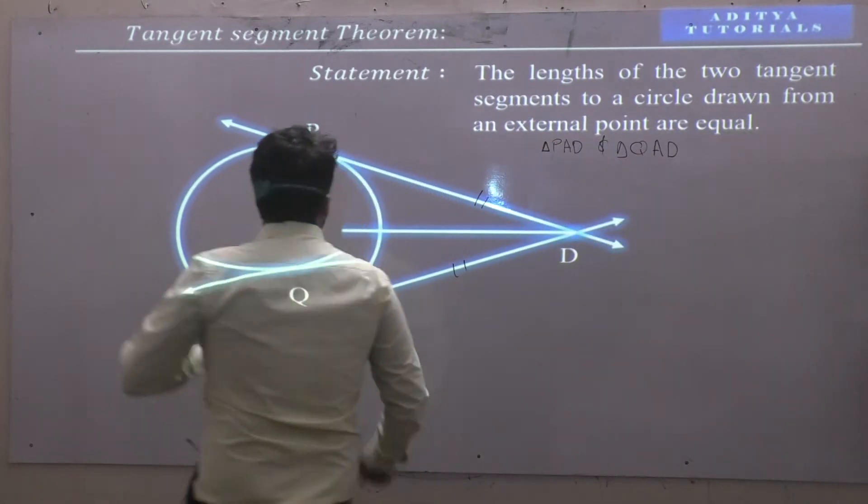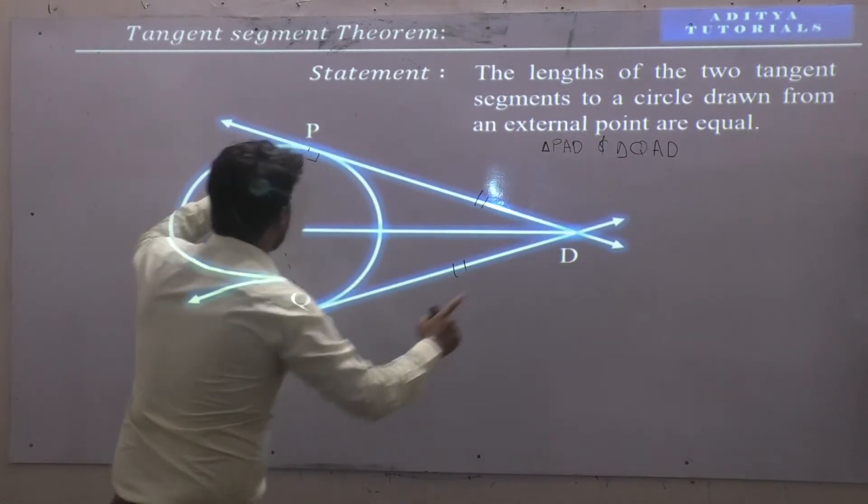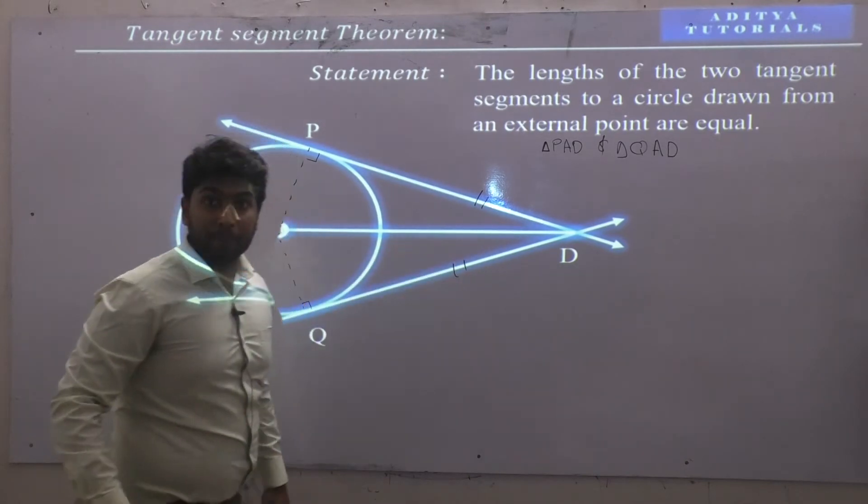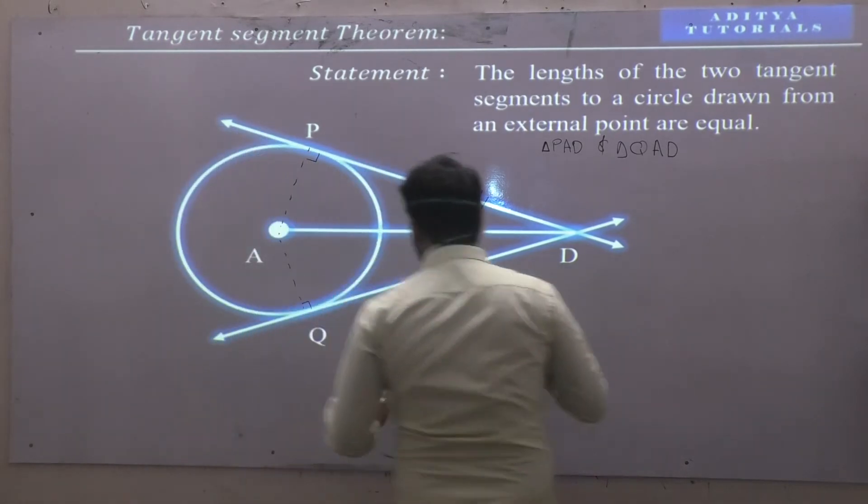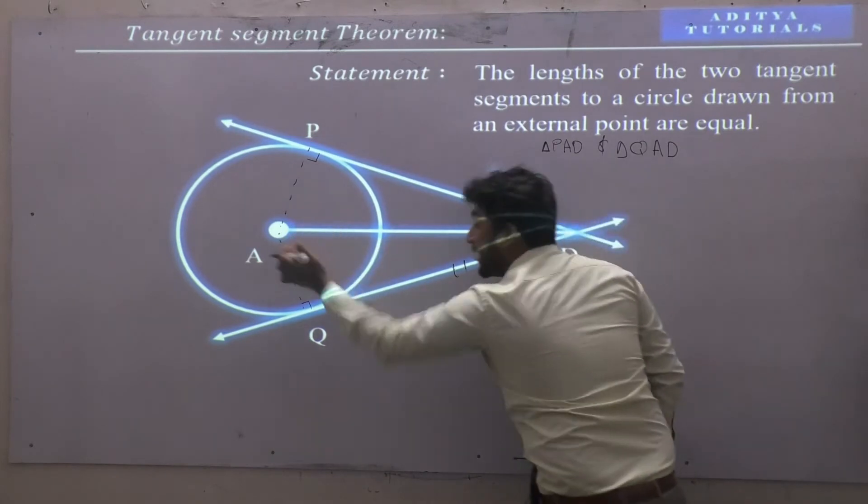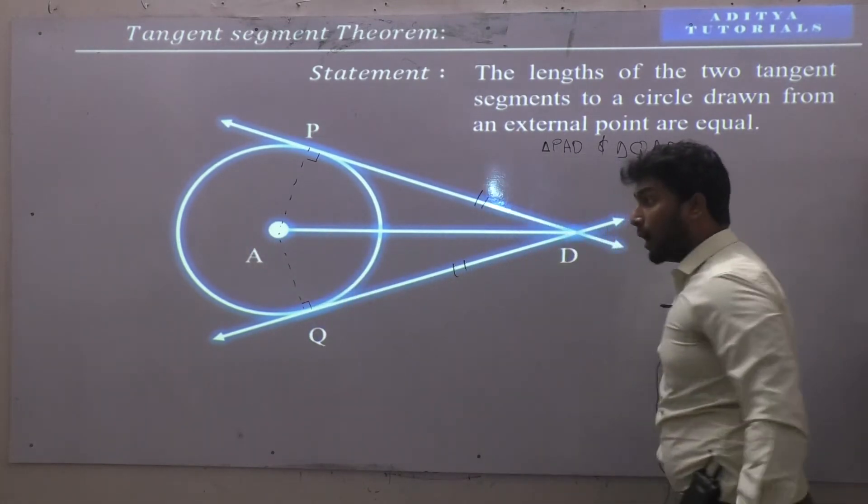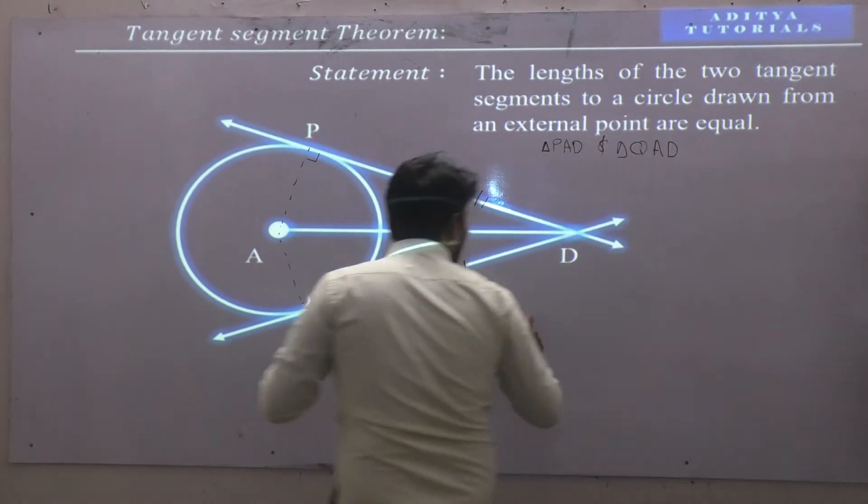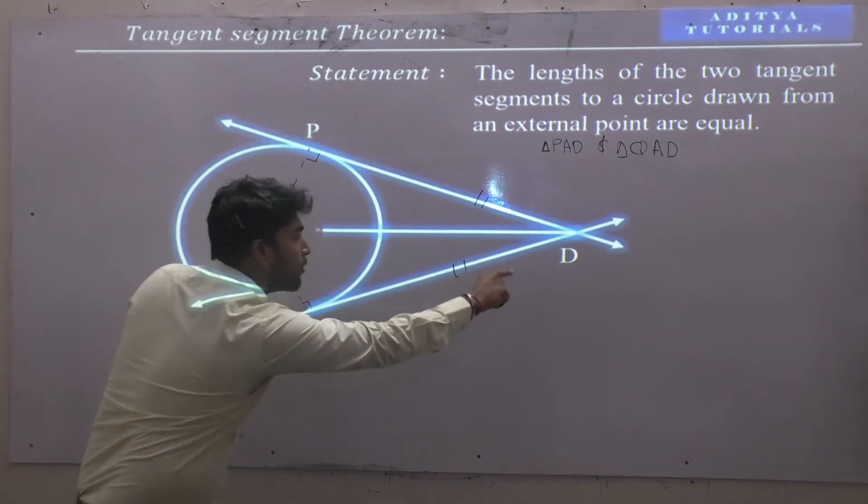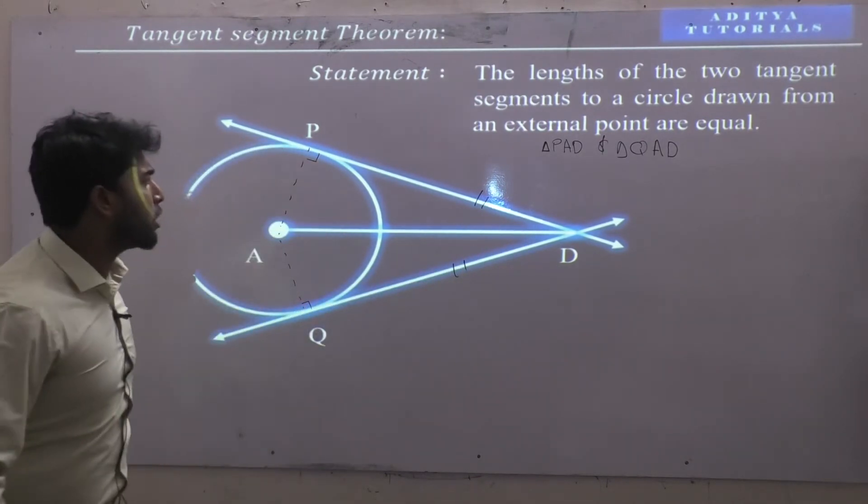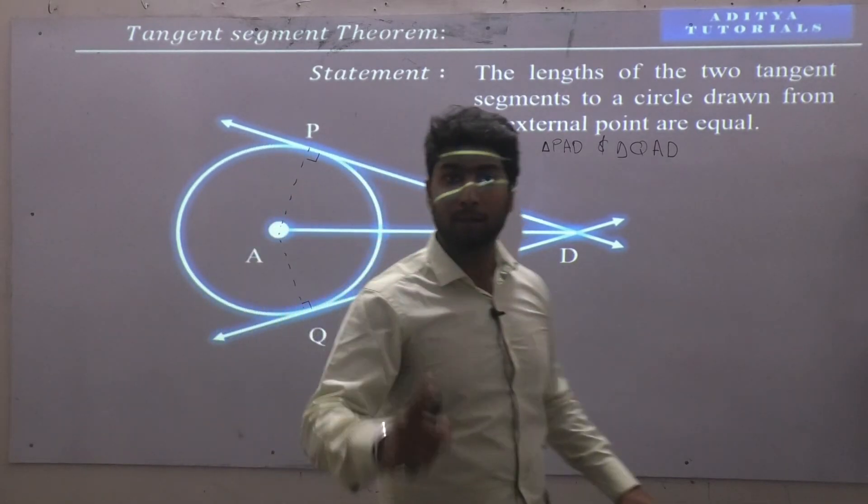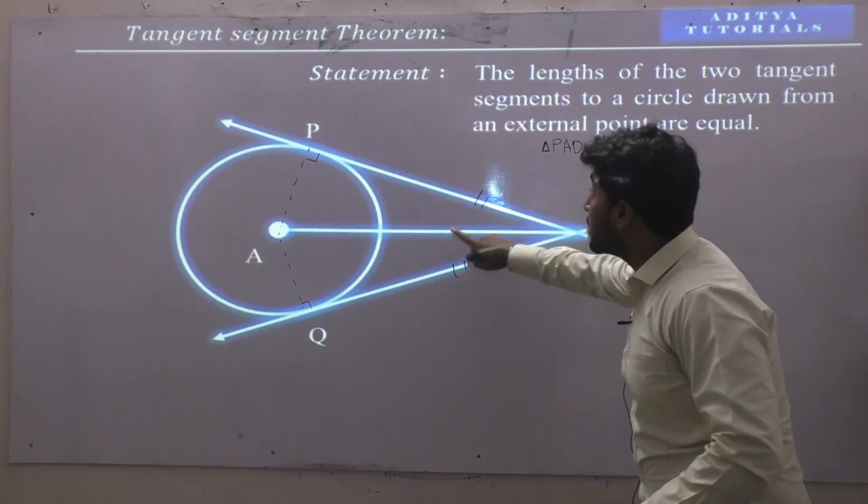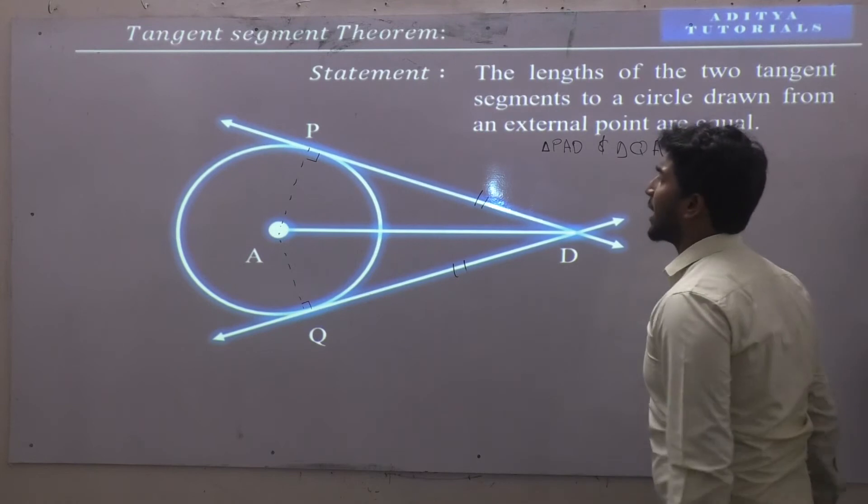Now I will show you one thing. So I have to ask, is this PD in triangle PAD? Yes? And this DQ in triangle DAQ? Yes. So if I am trying to prove PD and DQ, do I have two triangles equal to them? Yes or no? Yes. So I will show you two triangles equal. Okay let's prove these two triangles equal.